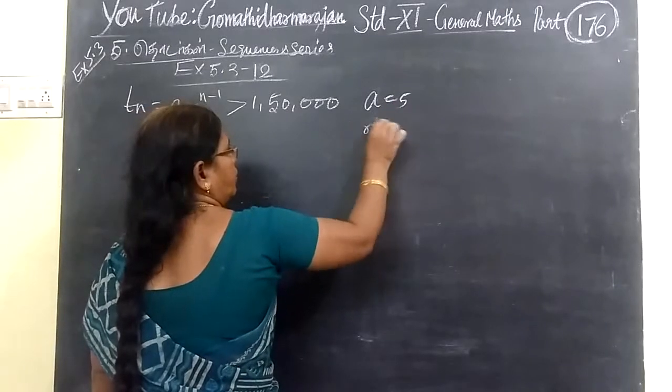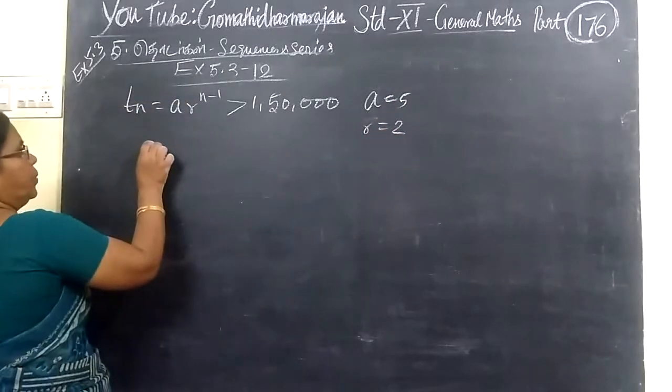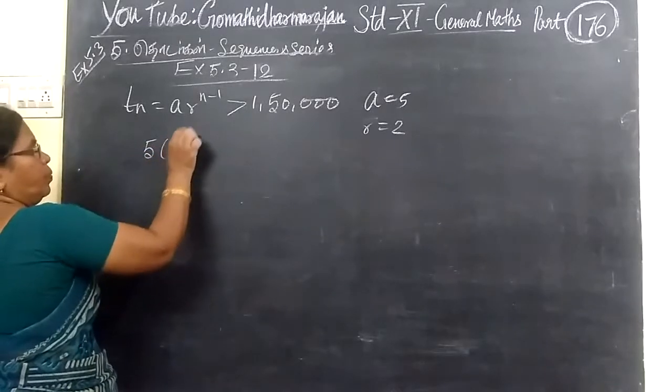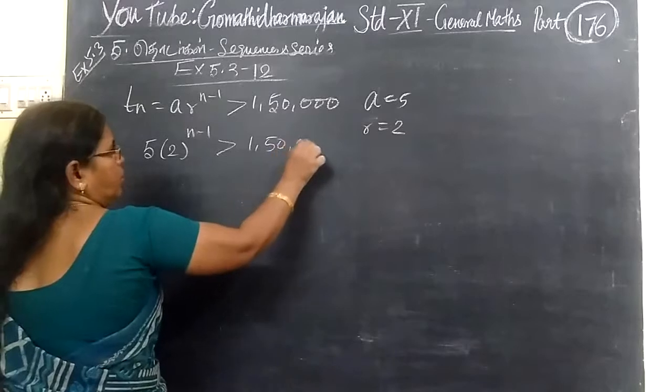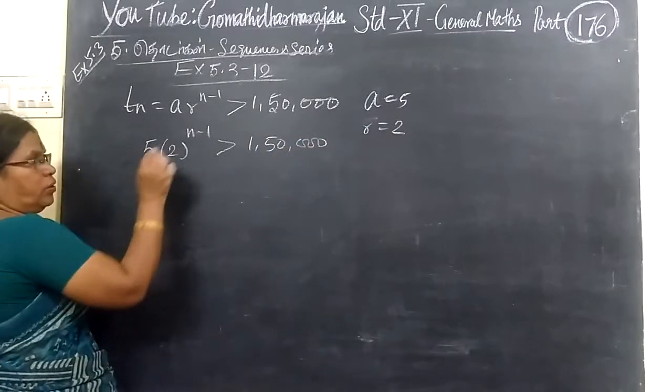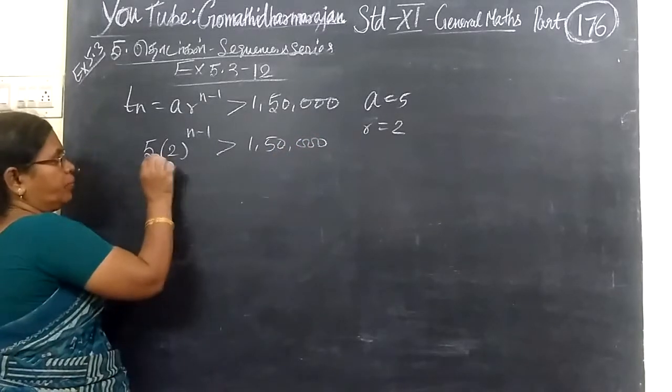You are given that a = 5 and r = 2. So, the formula is sufficient here: 5 times 2 to the power n-1. We want to find n.